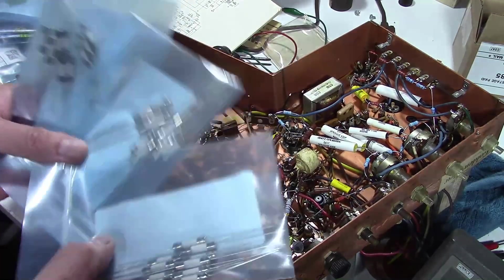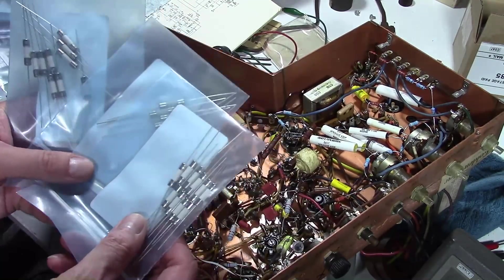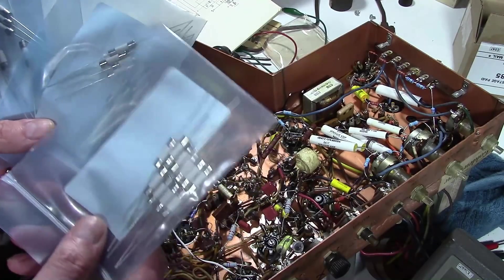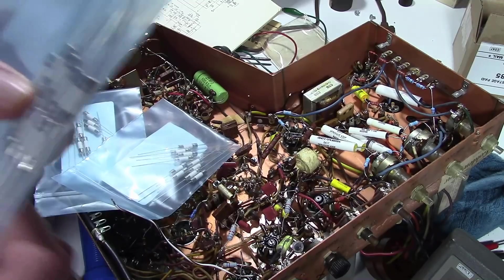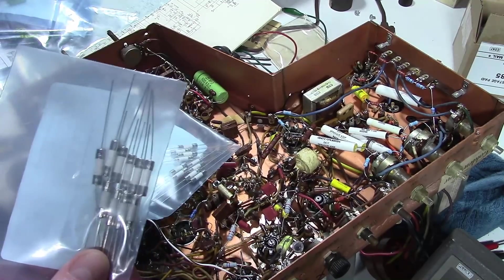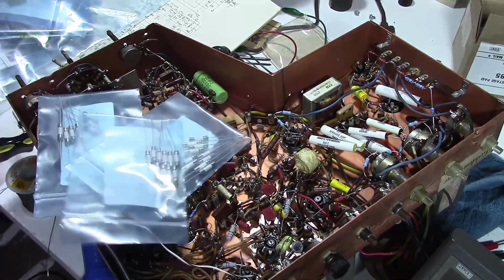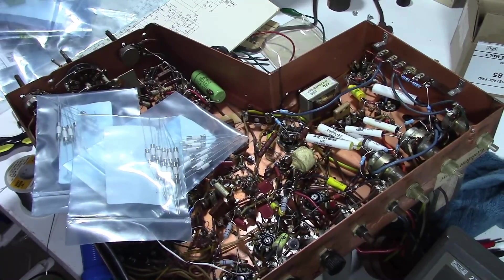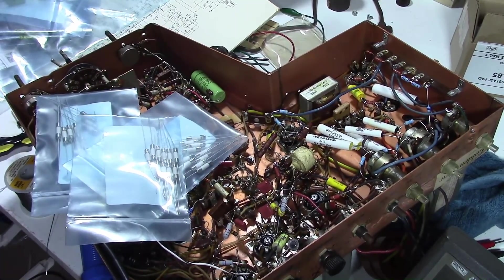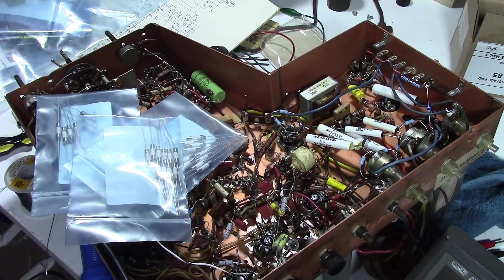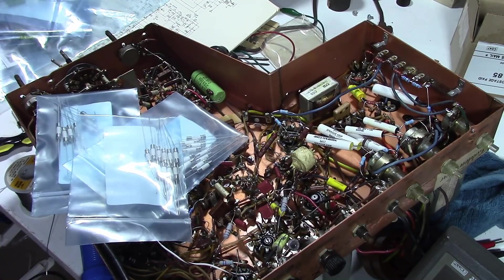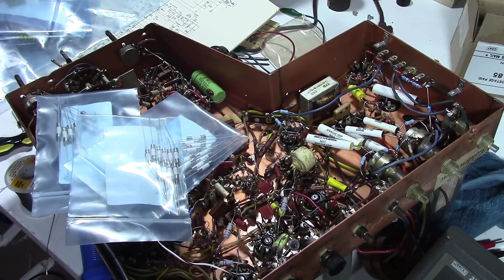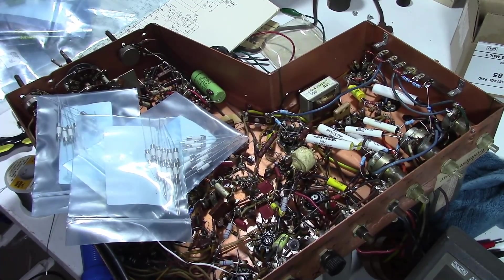So here are some fuses I just got. You may notice something about them. They are white inside. Well that's because these are slow blow fuses. I'll grab a glass fuse so you can see the difference. The reason they call them slow blow is they don't burn out immediately when there's too much current going through them.